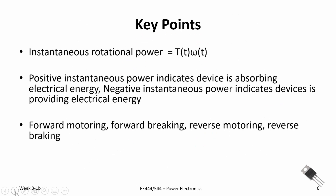Let's touch on the key points. We went over instantaneous rotational power, which equals instantaneous torque times instantaneous angular velocity. Positive instantaneous power indicates the device is absorbing electrical energy; negative instantaneous power indicates the device is providing electrical energy — analogous to passive sign convention for electrical devices. Finally we looked at the four quadrants of motor operation: forward motoring, forward braking, reverse motoring, and reverse braking. That's important as you design a four-quadrant motor driver — you'll need to consider how you handle current, which is proportional to torque, and the voltage applied to the armature.